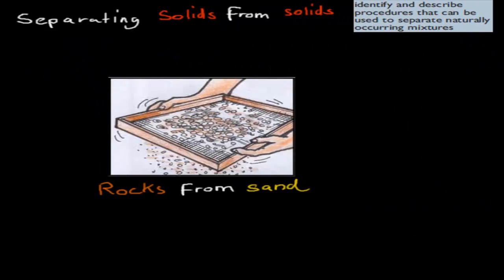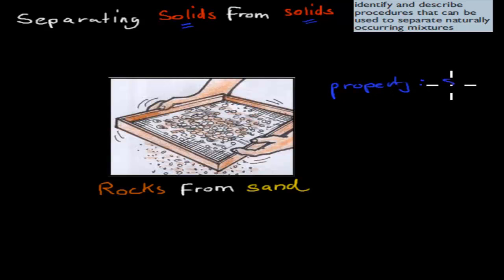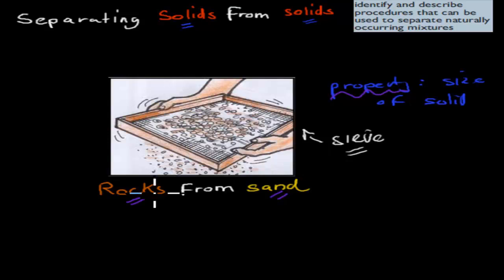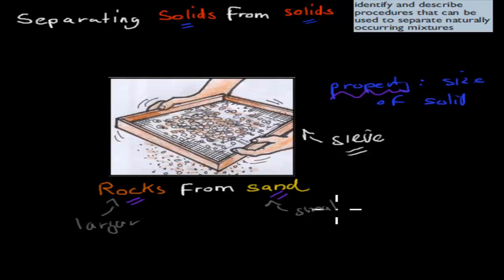The first method I'll talk about is separating solids from solids, where the property we use is the size of the solids. An example is rocks and sand at the beach. What we can do is use a sieve to separate the rocks from the sand, because the rocks are larger than the sand, which is finer and smaller. By using this sieve, the sand drops through and only the rocks stay behind. So here we've separated a mixture of rocks and sand.